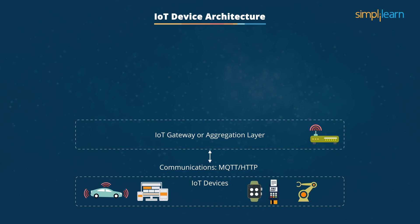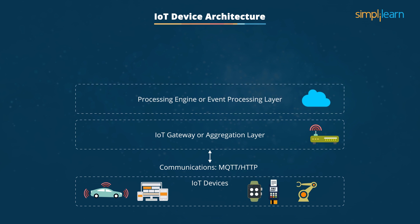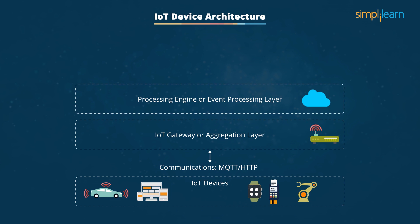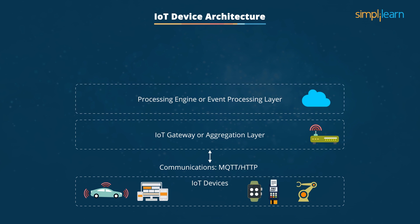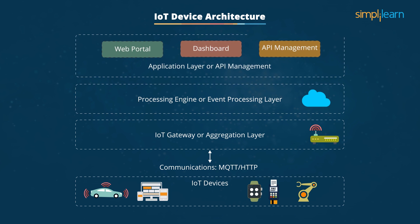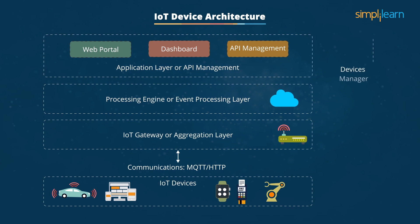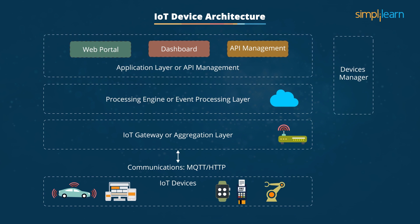These two layers form the definition engine and they set the rules for data aggregation. The next layer is cloud-based and is called the processing engine or event processing layer. It has numerous algorithms and data processing elements that are ultimately displayed on a dashboard. This layer processes the data obtained from the sensor layer.